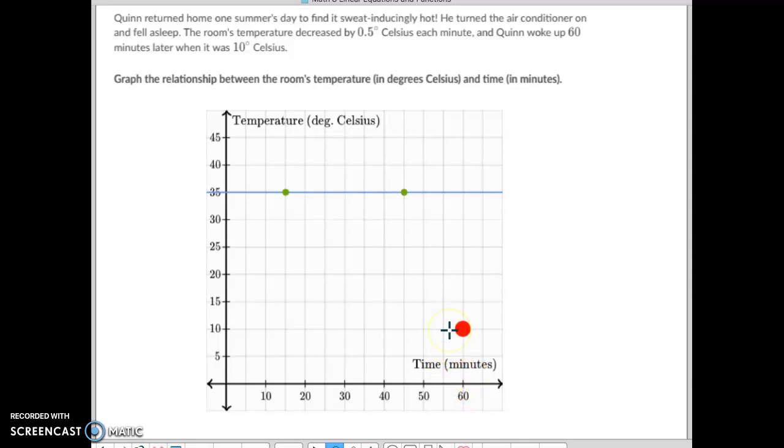So we take 10 times a half, or half of 10 would be 5 degrees. So in 10 minutes time, if we just take this little dot right here and duplicate that, 10 minutes ago, it would have been 5 degrees warmer. So 10 minutes ago, after 50 minutes, it would have been 5 degrees warmer, or 15.